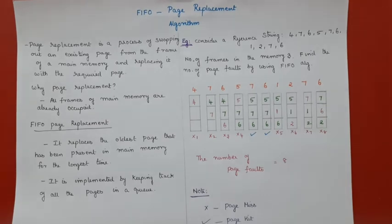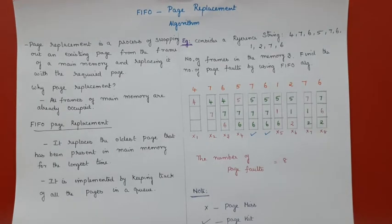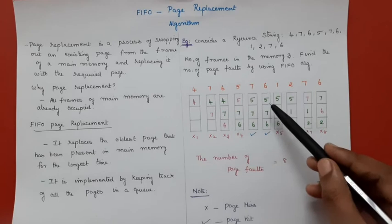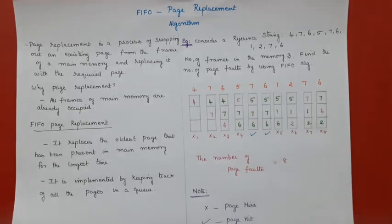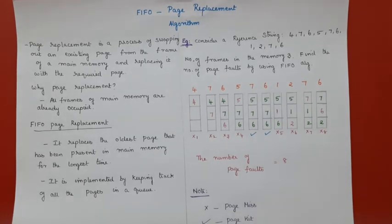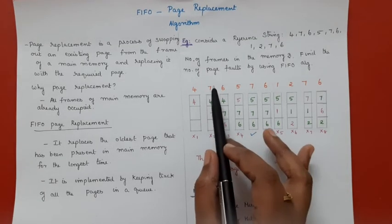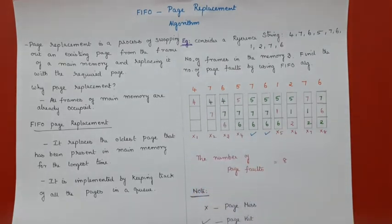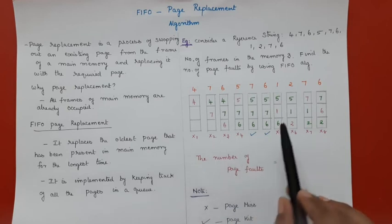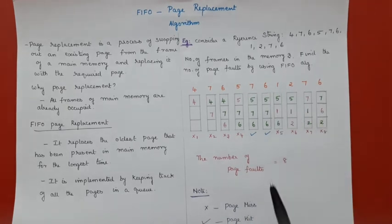The next page is 6 — 6 is already in main memory, so it is once again a page hit. The next page is 1 — 1 is not in memory, so I need to swap out a page. Comparing 7, 6, and 5, page 7 has been in memory the longest, so I remove 7 and load page 1. This is a page fault.